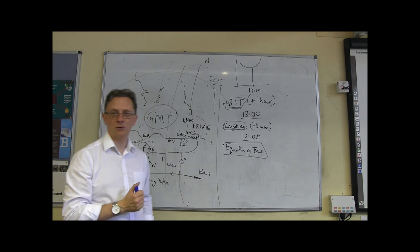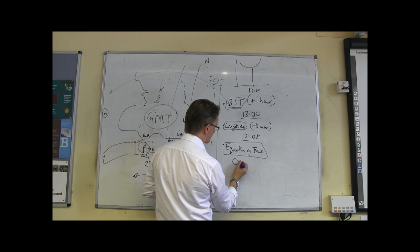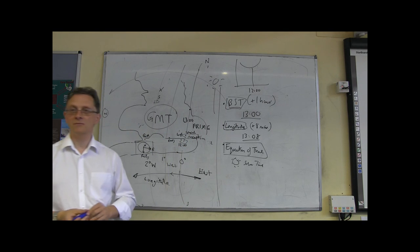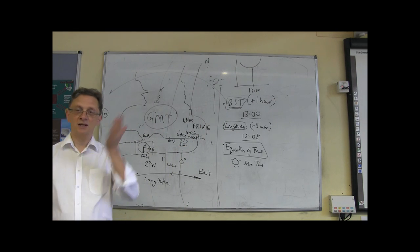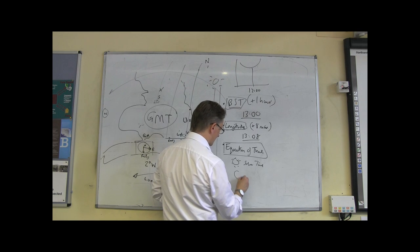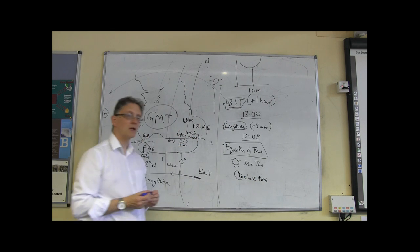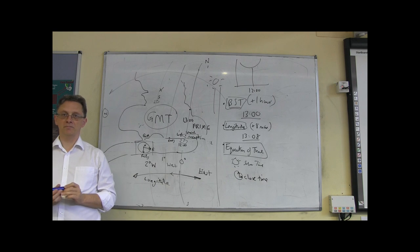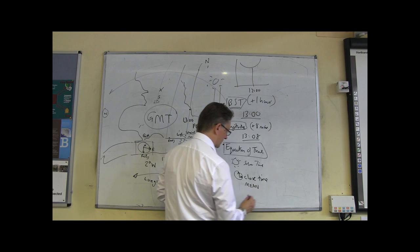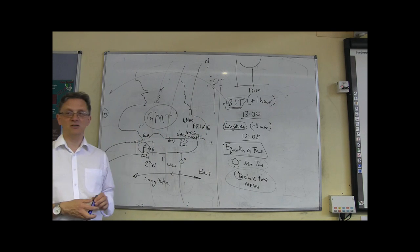A really good way to understand the equation of time is to think about the sun, which obviously gives us what we call solar time. Where would you look to find solar time? You'd look on a sundial or a shadow stick — it's time derived from the sun. However, for some centuries now we've had access to clocks, which obviously keep clock time. We now call that mean time instead of clock time.